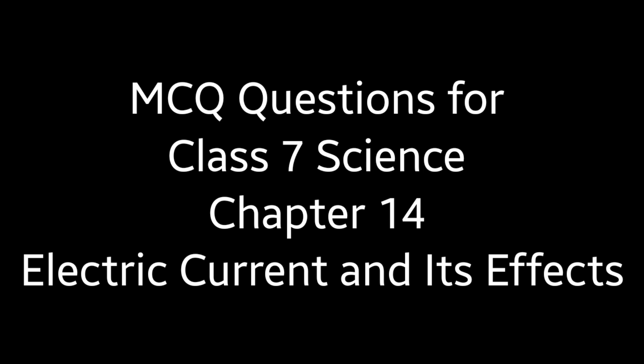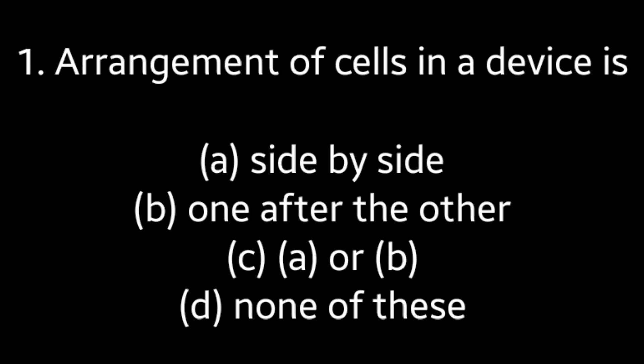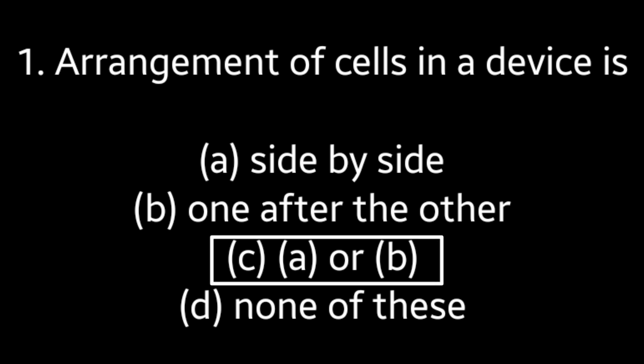Today we are going to be discussing the MCQ questions for Class 7 Science Chapter 14: Electric Current and its Effects. Question No. 1: Arrangement of cells in a device is — Side by side, One after the other, A or B, None of these. Answer is Option C: A or B.